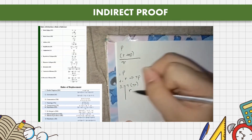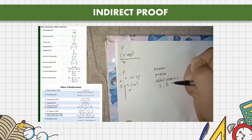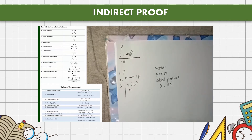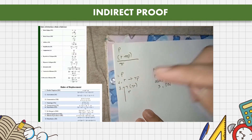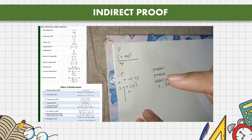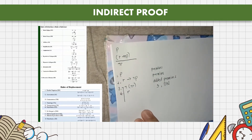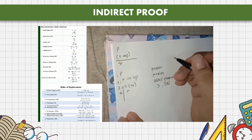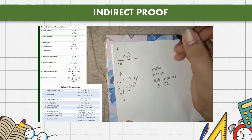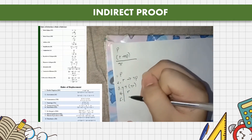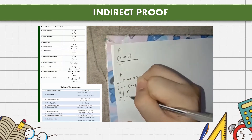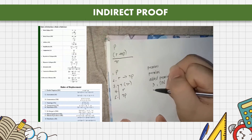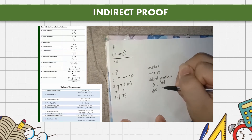Next, we can use premises 2 and 4 with modus ponens (MP). The result we get is not P. So we write: 2 and 4, modus ponens, giving not P.